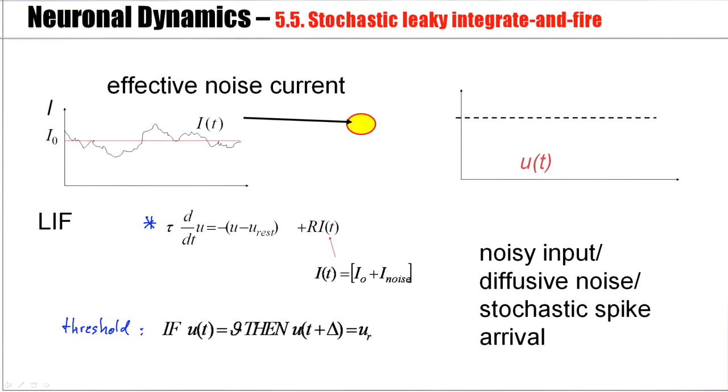If the membrane potential hits the threshold, then a spike is emitted. The spike is a formal event, we take note of the spike, and then we reset the membrane potential to some reset value, and this value here would be U_R. Now, the fluctuating input current continues, and so we would have another rise towards the threshold.